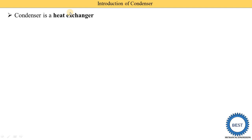Condensation means steam is converted into water — that is called condensation. This video is for the power plant engineering subject. When you study refrigeration and air conditioning, two terms appear: condenser and evaporator. Both are heat exchangers. In the condenser, vapor refrigerant is converted into liquid — that is why it is named condenser, because condensation is going on.